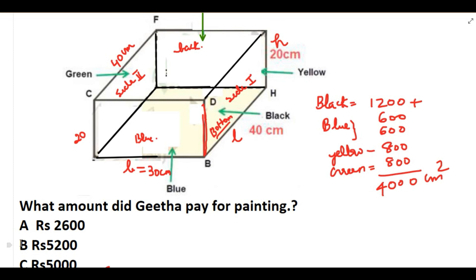This case study question is from the chapter Surface Area and Volume and is based on the cuboid. A cuboid has 6 faces and 3 dimensions: length, breadth, and height. The main formulas used were: volume of a cuboid = length × breadth × height, and area of each rectangular face = length × breadth. Thank you for watching.